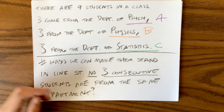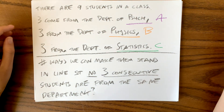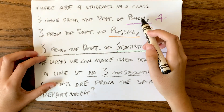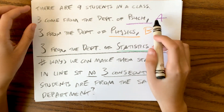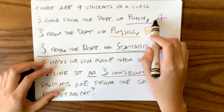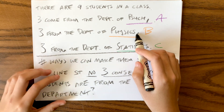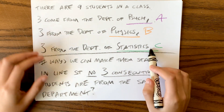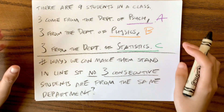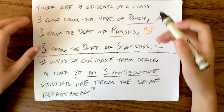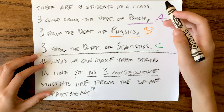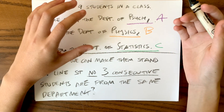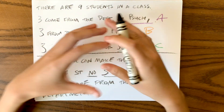In our problem, we want to make sure there are no three consecutive students from the same department. Our properties would be the reverse of that: property one is that the three psychology students are standing next to each other, property two is the three physics students are standing next to each other, and property three is the three statistics students are standing next to each other. These are the properties we want to exclude because we don't want them standing next to each other.